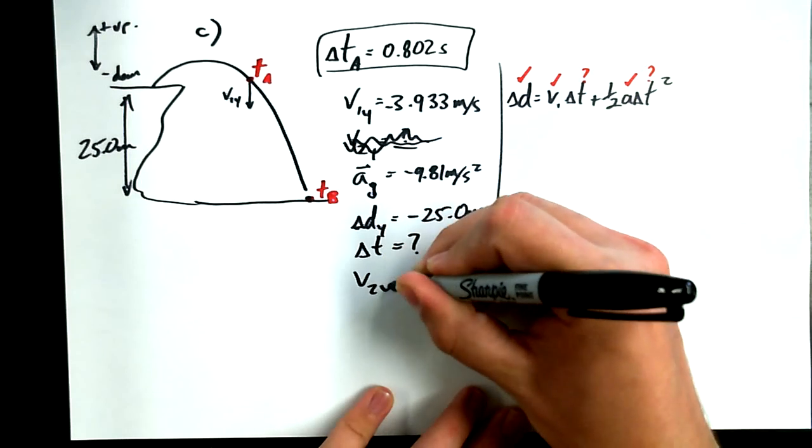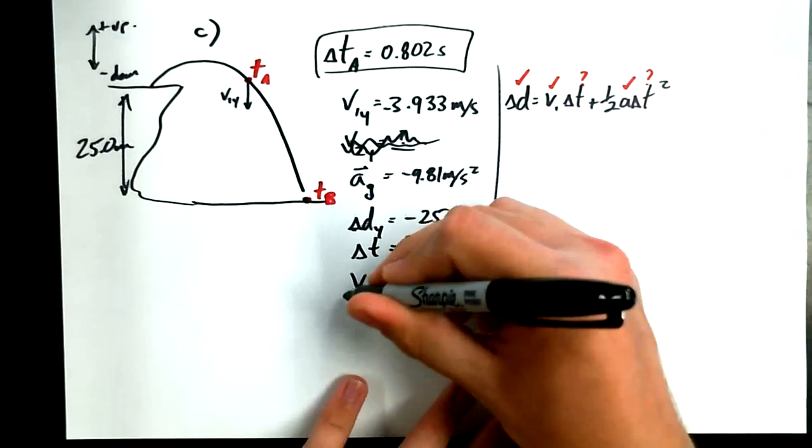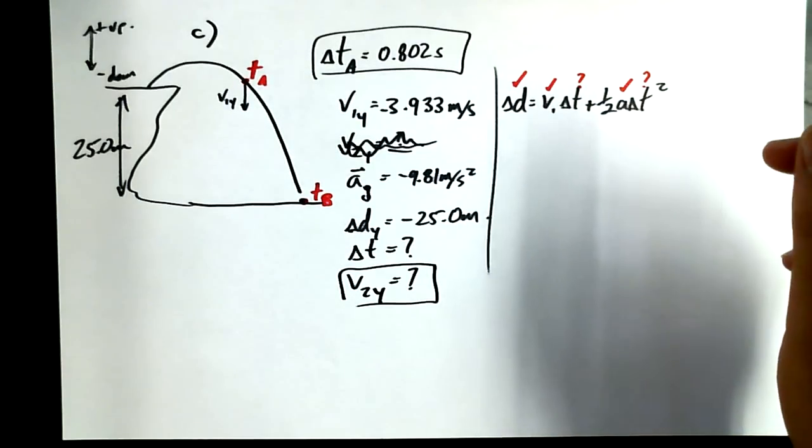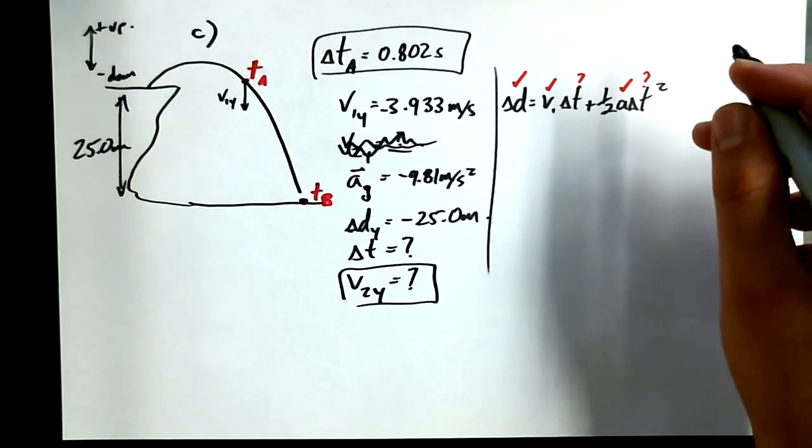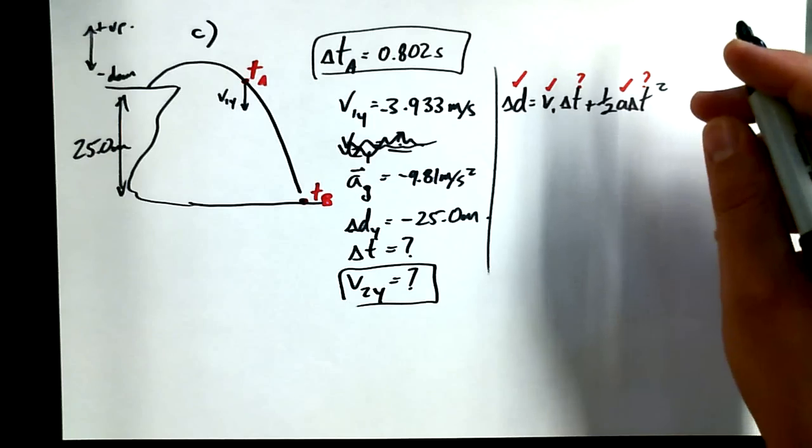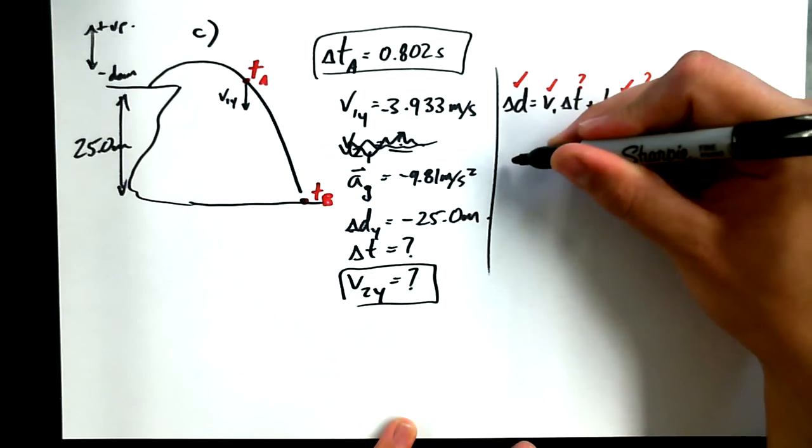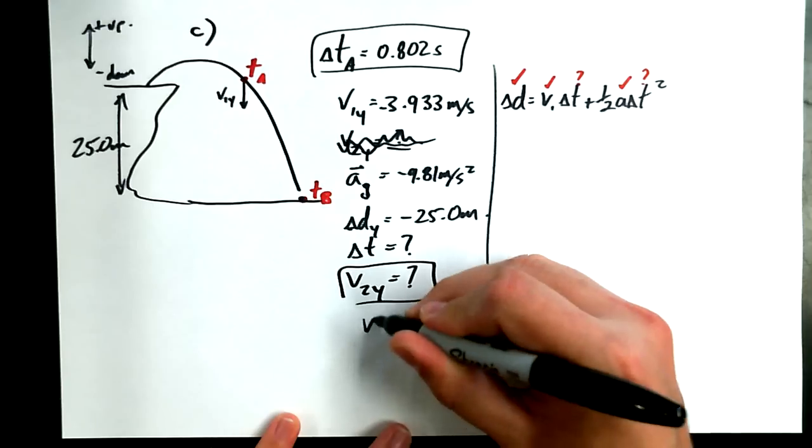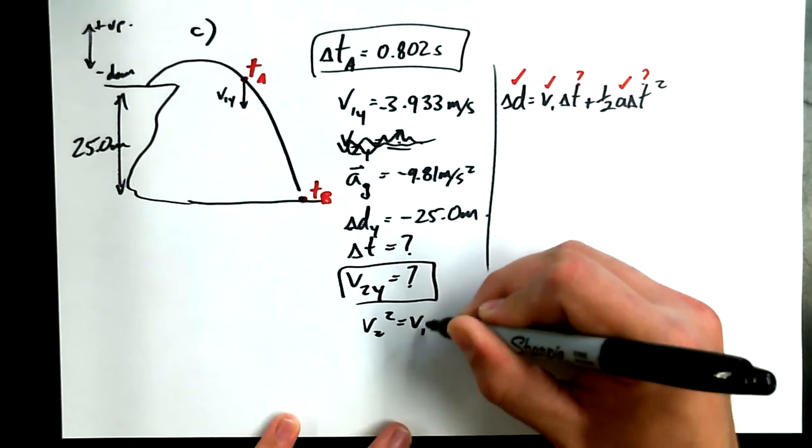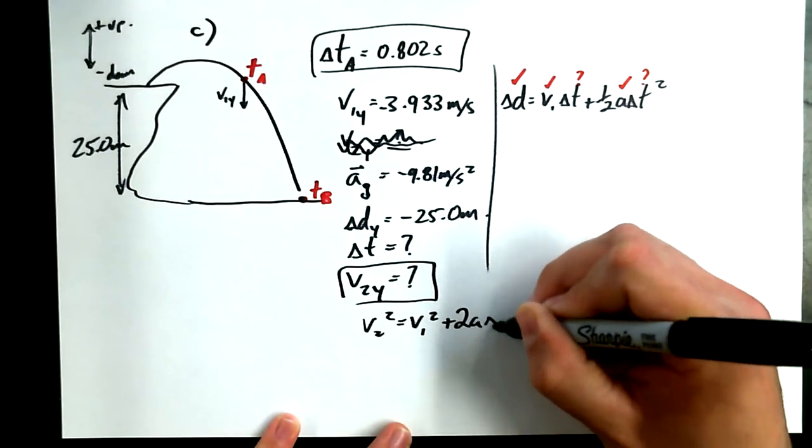Remember what I said before. Anytime you have three values, you can solve for a fourth. And anytime you have four values, it really opens up your possibilities here. Instead of jumping straight to delta T, I'm going to find V2Y just for kicks and see what happens. So, V2Y. If I happen to find V2Y before I find delta T, just for fun, let's see what opportunities it opens up for me.